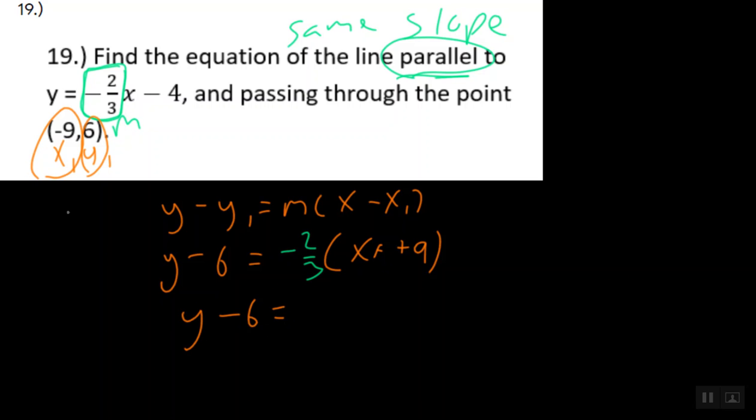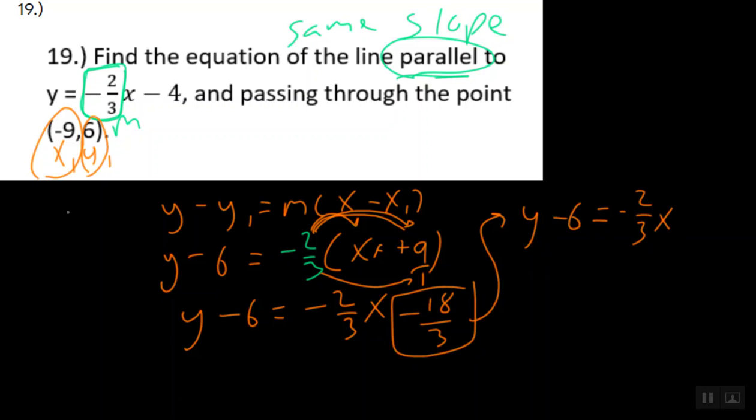We have y minus six is equal to negative two-thirds times x, which will be negative two over three x. But this tricky one is negative two over three times nine. Well, remember, we want to change nine into a fraction, nine over one. And the rule is top times top. So we're going to do negative two times nine, which will be negative 18, over and bottom times bottom, three times one, which is three. And now we can go ahead and simplify this to y minus six equals negative two over three x. And we're going to simplify this because negative 18 divided by three is negative six.